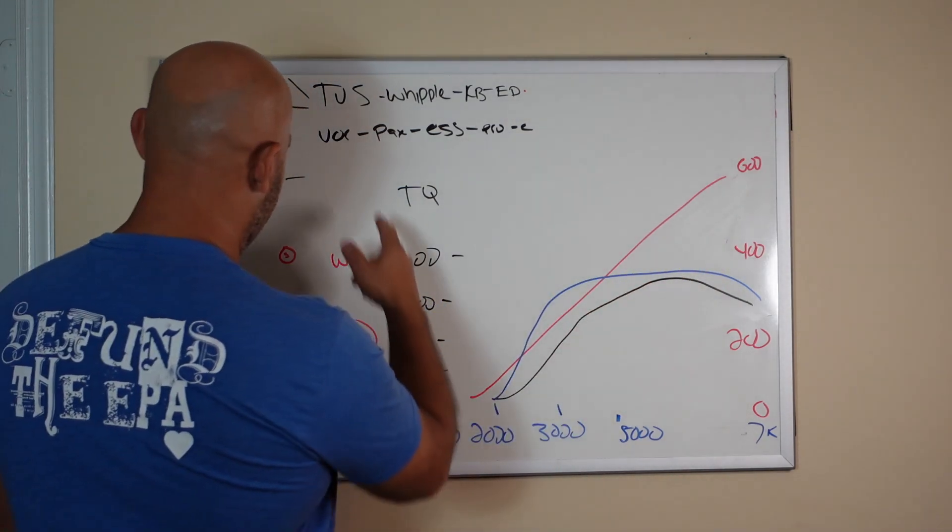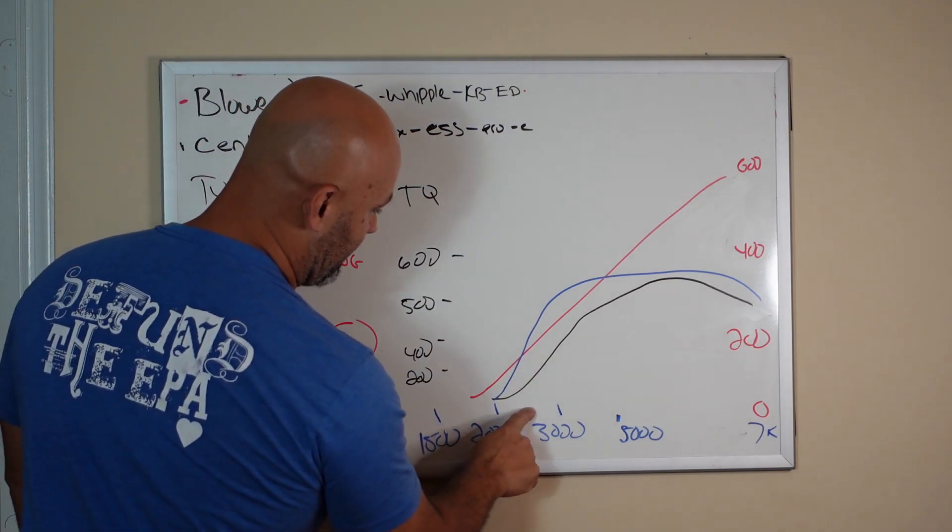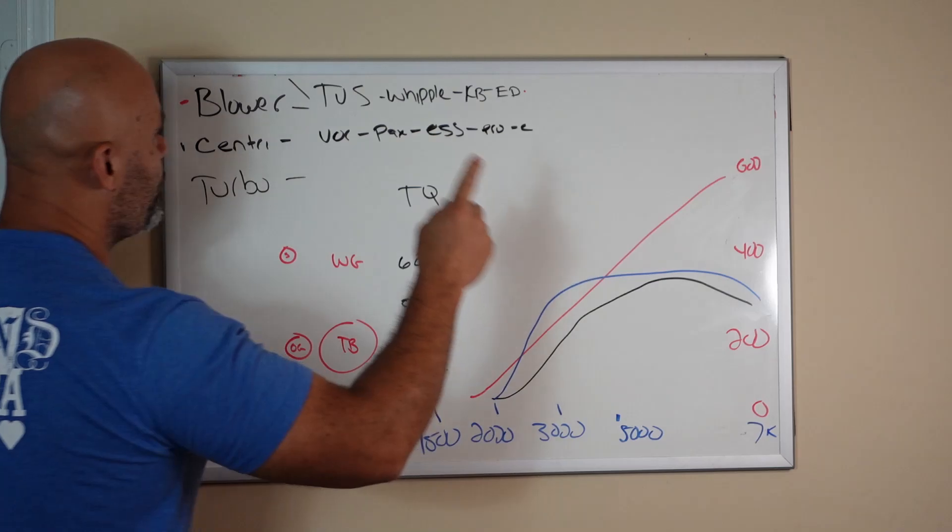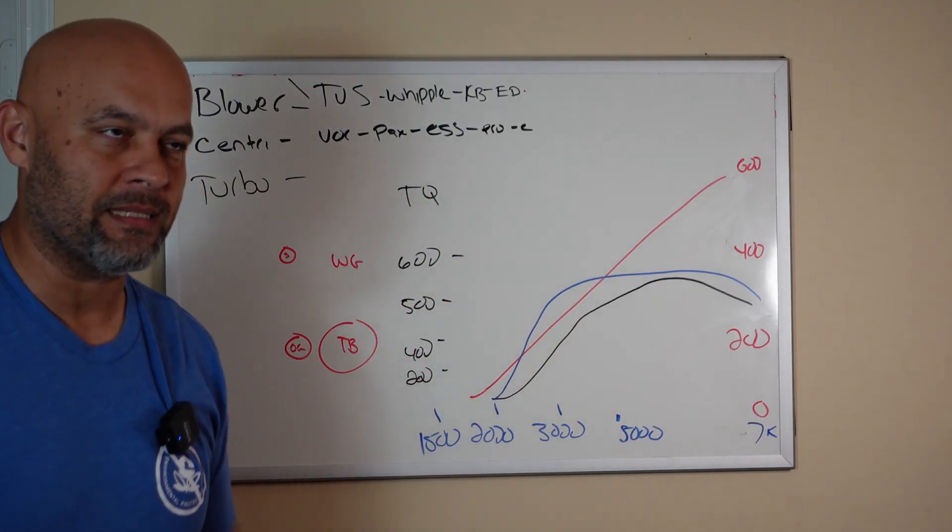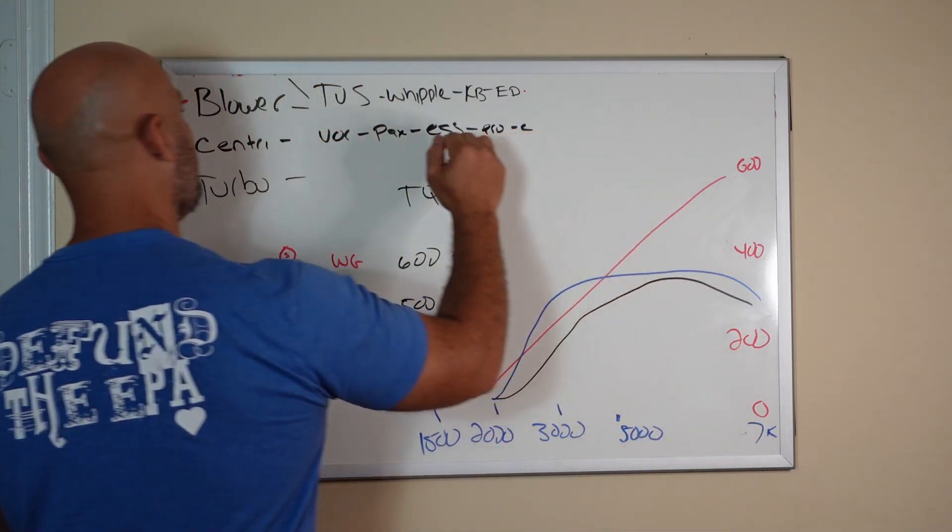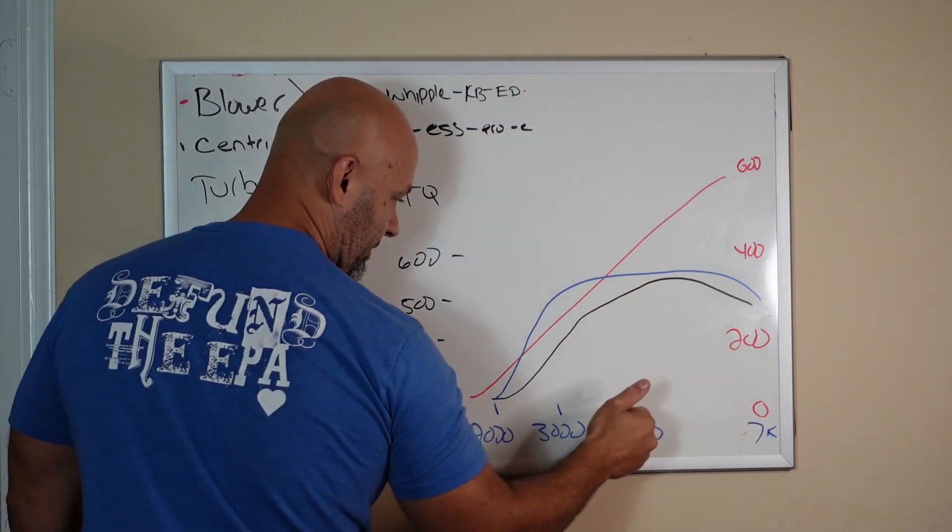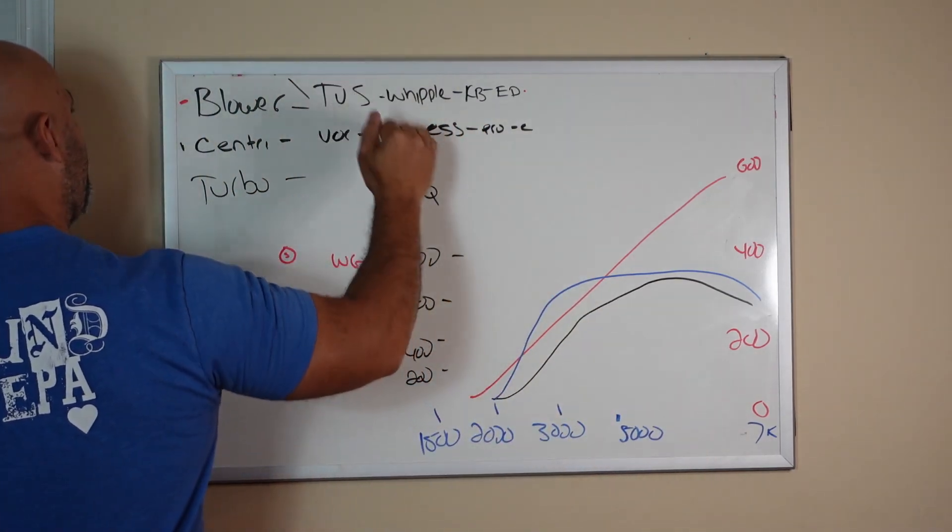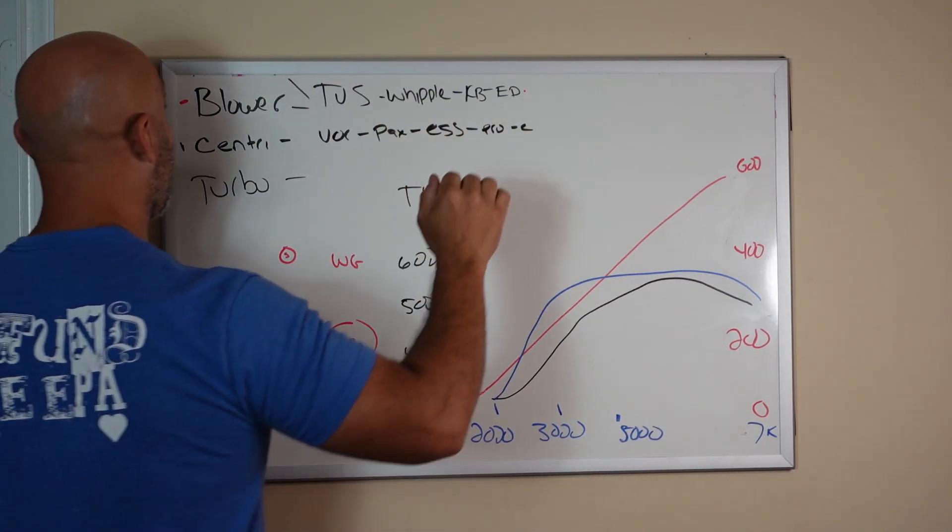But for some reason people get a centrifugal at 10 PSI and hate the fact that it feels lazy at low RPM. So choose your power adder wisely. If you're racing above 5000 to 6000 RPMs, I really love centrifugals. If you live above 5000 RPMs in daily driving situations, centrifugals are badass.